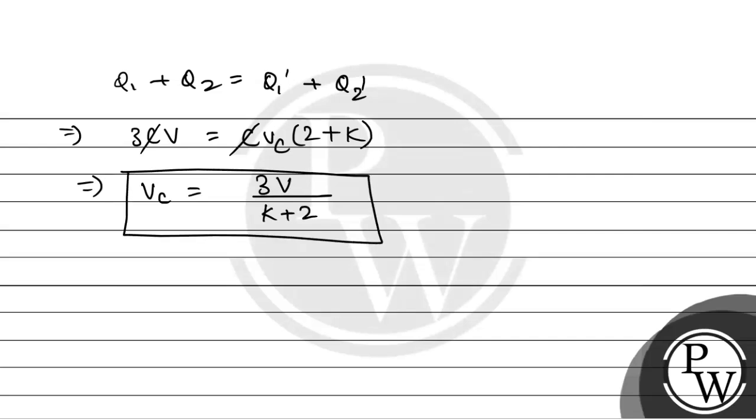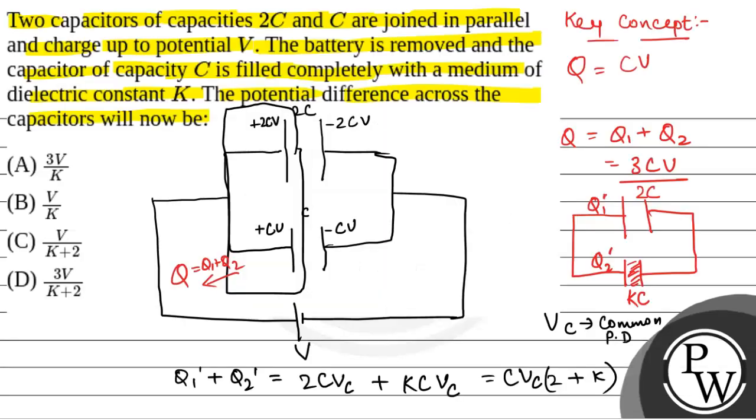This will be the common potential difference. And the correct option will be option D. Hope you all understood it well. Best of luck if you need it.